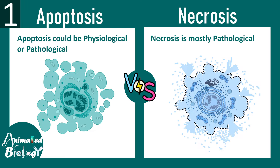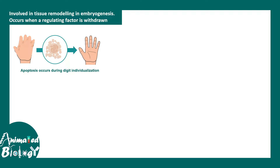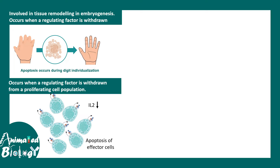The first and most important difference: apoptosis can be physiological or pathological, but necrosis is mostly pathological — there are currently no instances where necrosis is considered physiological. During development, apoptosis occurs, for example, when our digits are separated. Apoptosis works like a sculptor during development. It can also occur when a regulating factor is withdrawn, for example when interleukin-2 levels drop, causing apoptosis of effector T cells — this is completely normal.